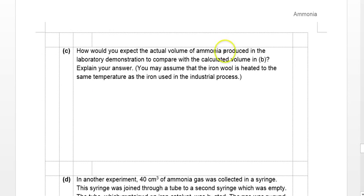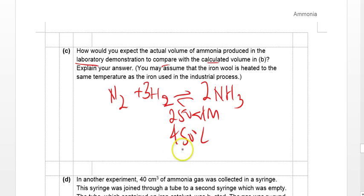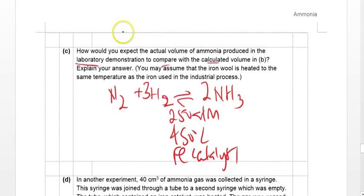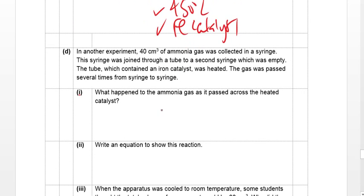The actual volume of ammonia produced in the lab would be a bit less than the calculated value. This is because in the Haber process we need 250 atm pressure, 450°C, and an iron catalyst. In the lab, we have the heat and the catalyst, but the high pressure is absent. Without high pressure, the overall percentage conversion would actually be less than 15%.